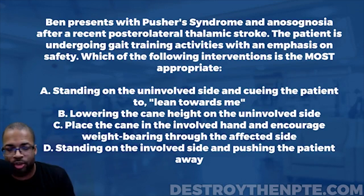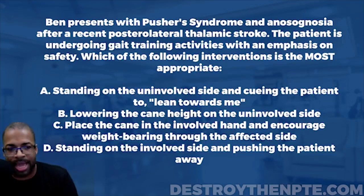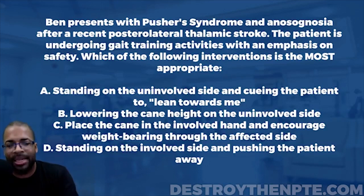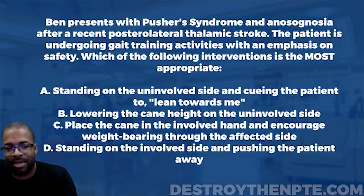Let's go through the answer choices again. A is standing on the uninvolved side and cuing the patient to lean towards me. B is lowering the cane height on the uninvolved side. C is place the cane in the involved hand and encourage weight bearing through the affected side. And D is standing on the involved side and pushing the patient away.